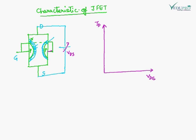The gate is shorted and there is no gate voltage applied. We are applying VDS, the drain-to-source voltage. We will plot the curve between ID and VDS. When VDS is 0, ID is going to be 0, because there will be no electrons which will be attracted.